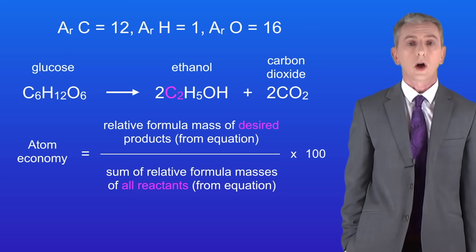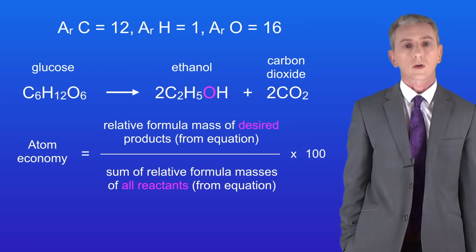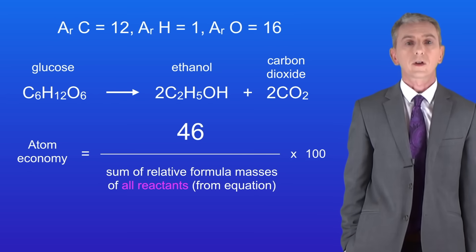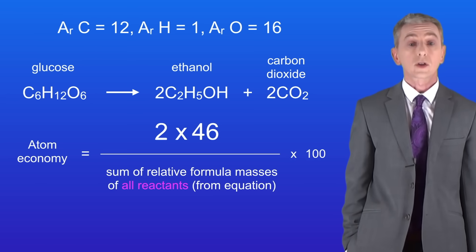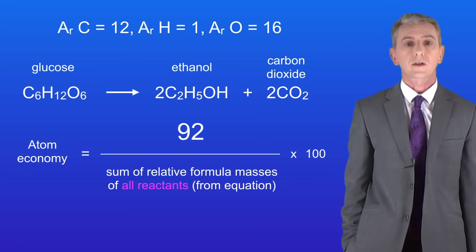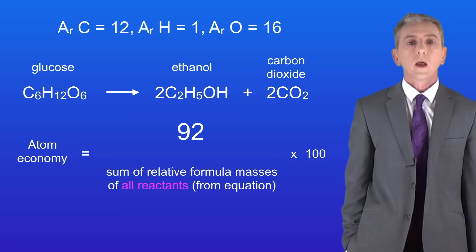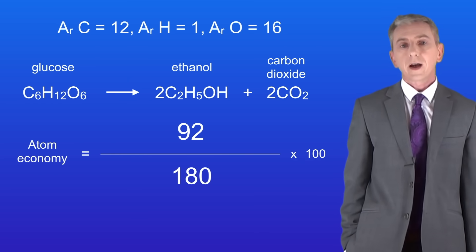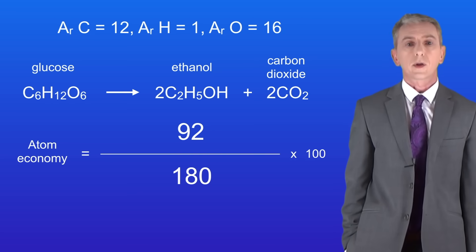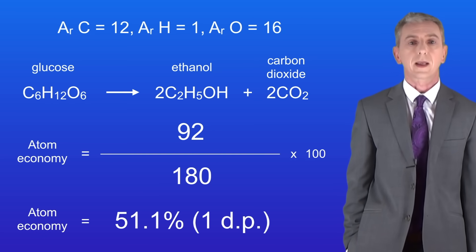Ethanol has two carbons, six hydrogens, and one oxygen. Adding up all of the relative atomic masses gives us a relative formula mass of 46. However, we've got a large 2 in front of the ethanol, meaning we're making two molecules of ethanol. So we multiply 46 by 2, giving us 92. The relative formula mass of our reactant, glucose, is 180. Dividing 92 by 180 and then multiplying by 100 gives us an atom economy of 51.1% to one decimal place.